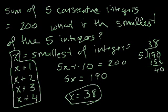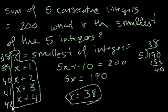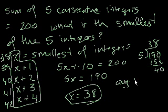Pretty straightforward problem. Now what if I were to ask you what is the average of the five consecutive numbers? Now that we know x is 38, the numbers are 38, 39, 40, 41, 42. We already know they sum to 200, and we divide by 5 because there are five numbers. So the average is 40.